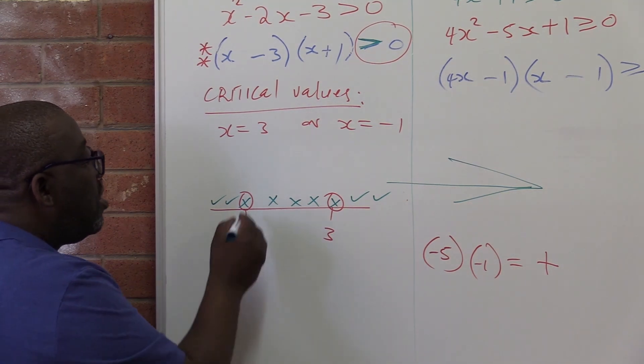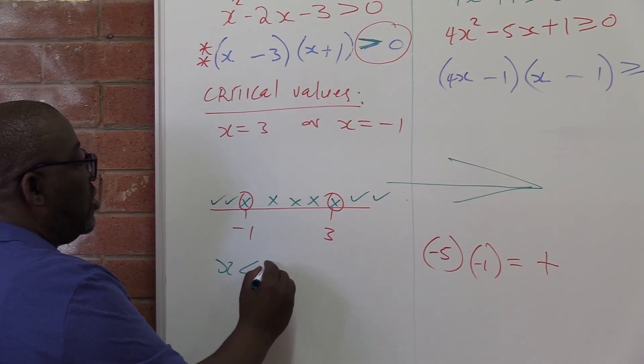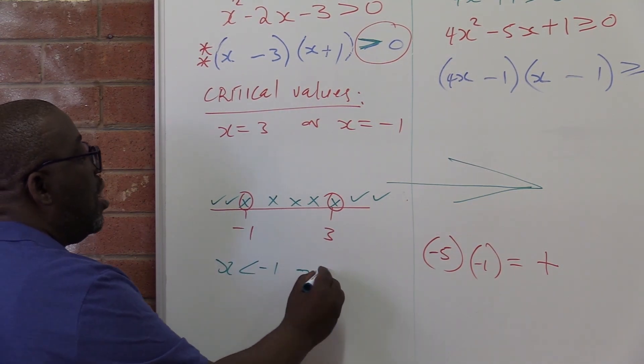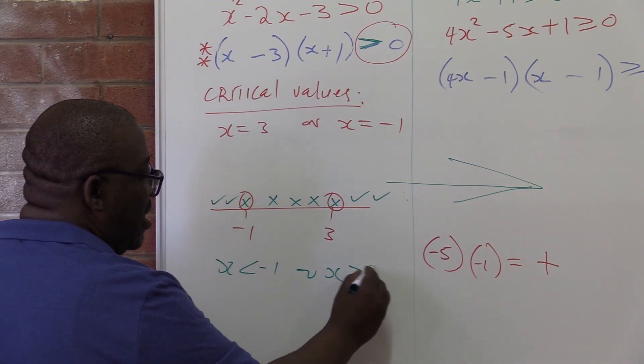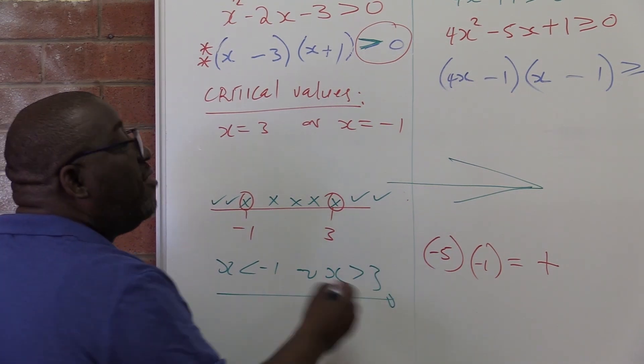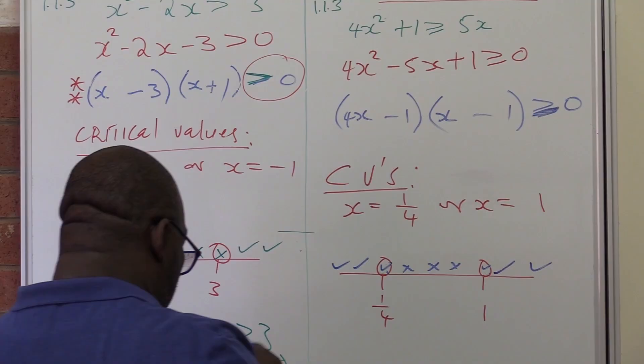So you write the solution: x are all the values that are less than minus one, or x are all the values that are greater than three. This will save time during examinations.